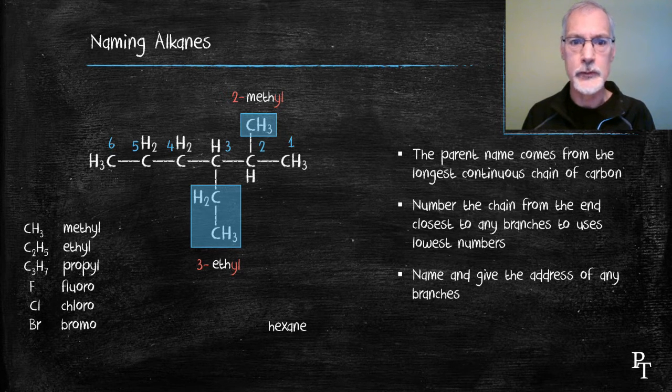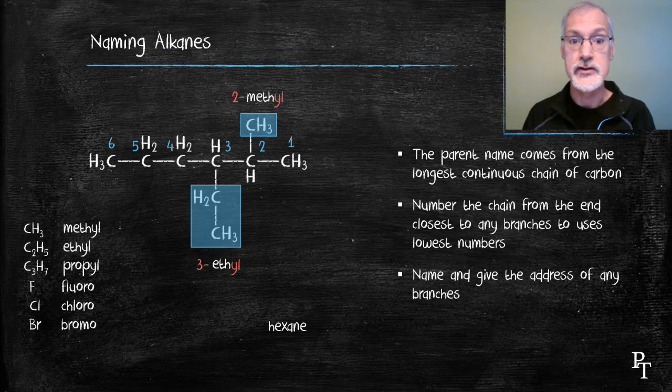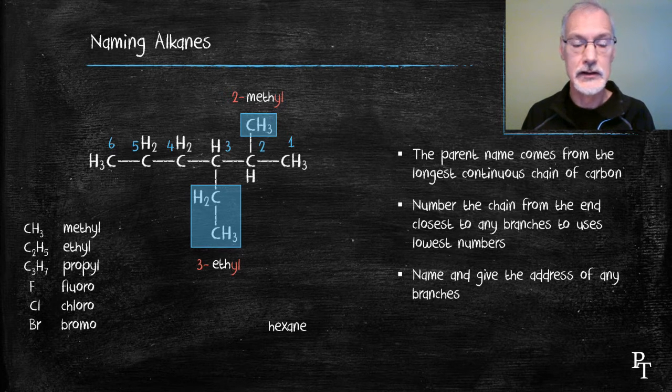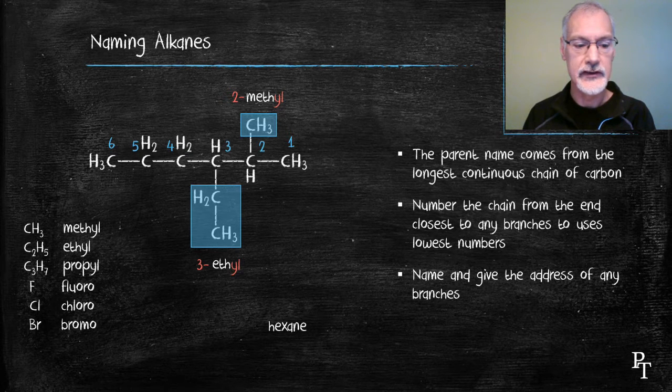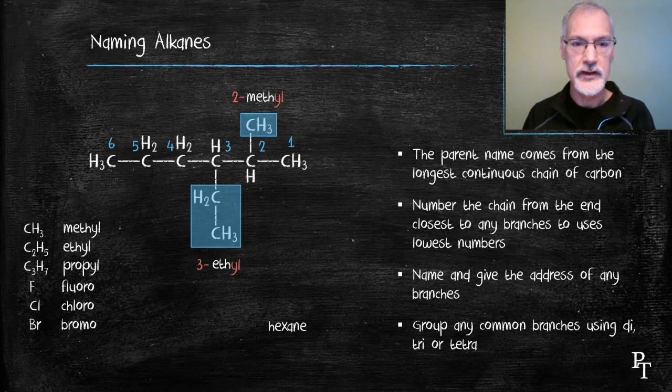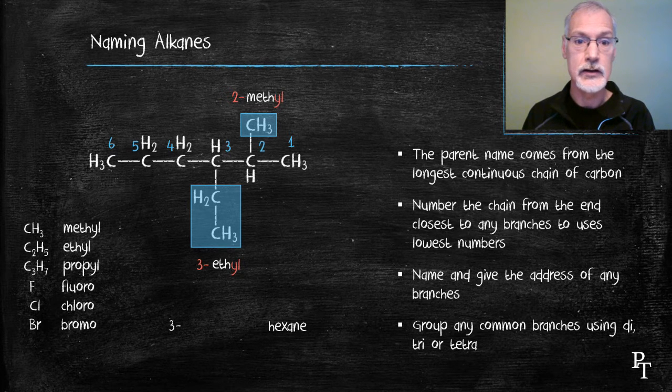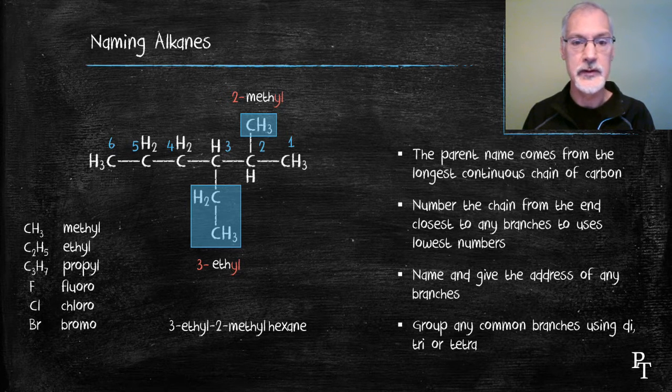If there's any common groups, I group them together. For instance, if there was two methyls, I would call it dimethyl. In this case, I don't have to apply that rule. And now I'll bring the prefixes down and put them with the name. And I list them in alphabetical order, hence eth comes before meth.